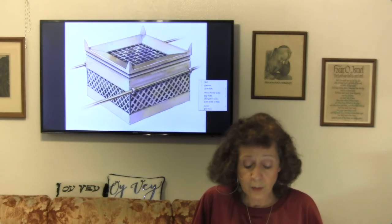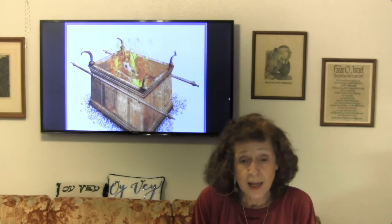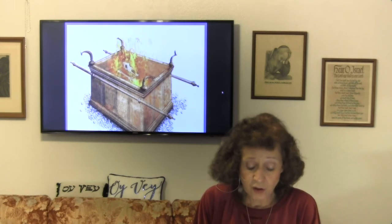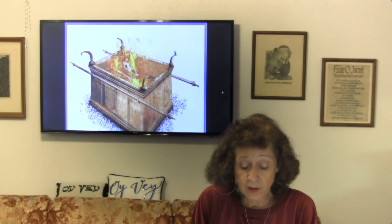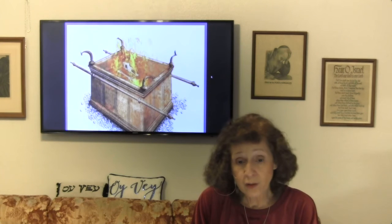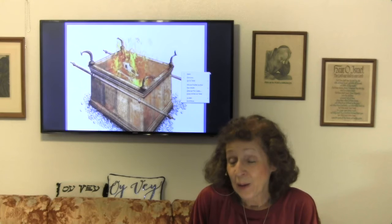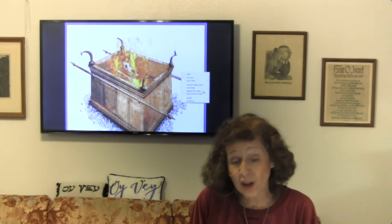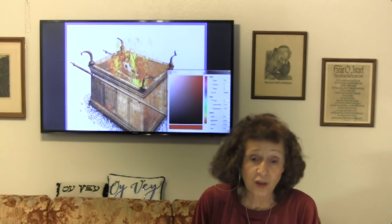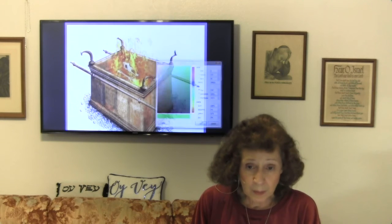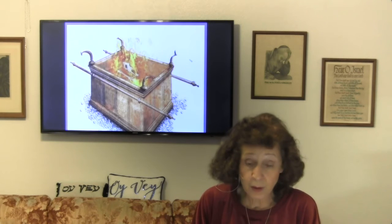The brazen altar was made of acacia wood overlaid with bronze — reminding us of the humanity, that Yeshua had to take on human form to rescue humans, and the bronze or brass representing the judgment of God that he took for us. The horns are a symbol of power to save, the power of protecting from the penalty of sin and a place of refuge. What's interesting about the brazen altar is the height of it was the height of the mercy seat — showing that as much as God has to judge sin, at the same time his mercy is just as great.